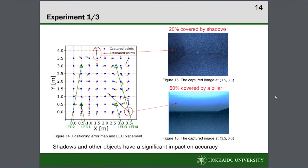You see the results of the first experiment. Figure 14 shows a positioning error map. Blue circles represent the coordinates of the actual position. Red circles represent the average value of 100 position attempts, and arrows represent positioning errors. We found that shadows and other objects have a significant impact on positioning accuracy.